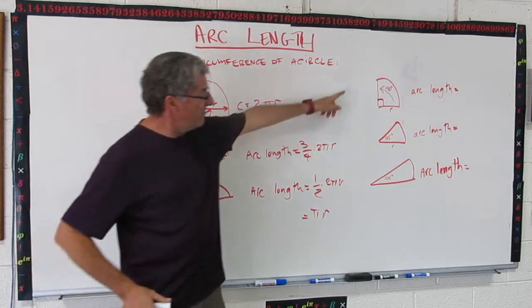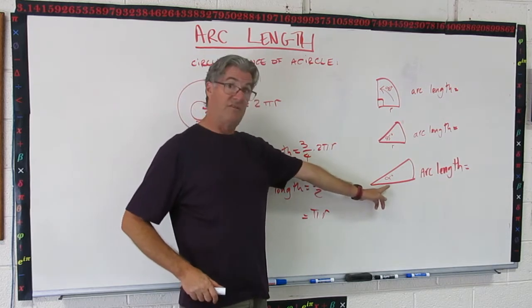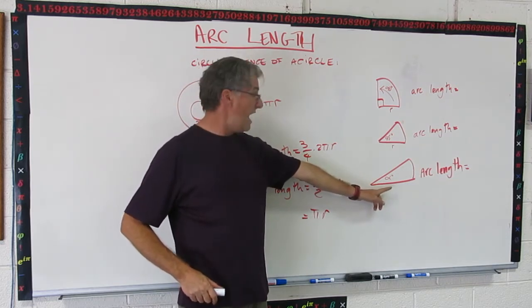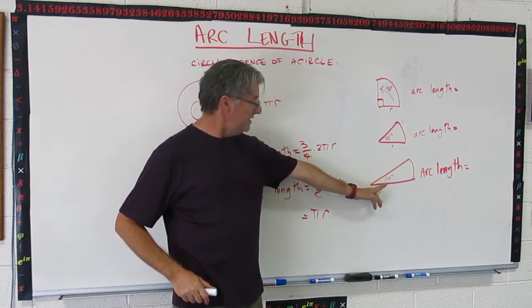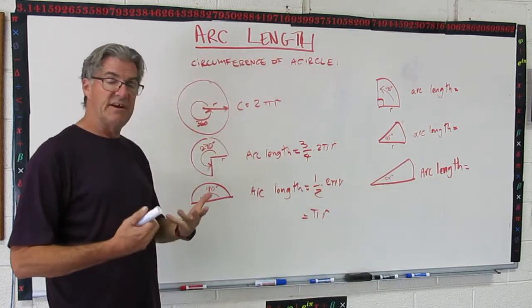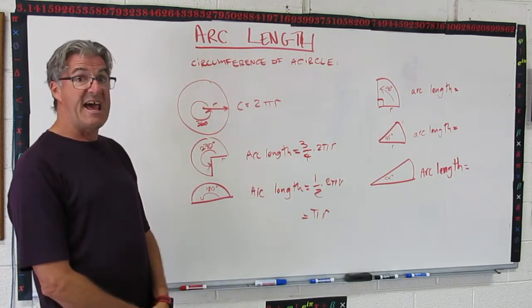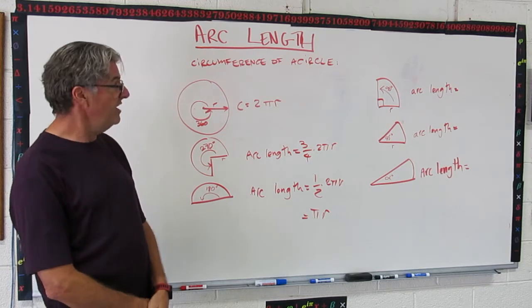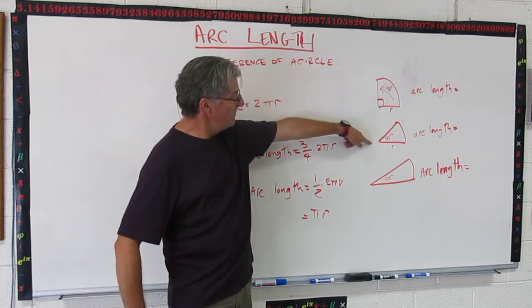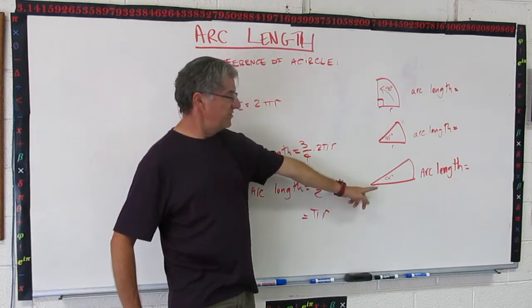What I'd like you to do is try these three and notice that this one does not have a number. It's got a variable. That's alpha degrees, and those Greek letters are commonly used to represent angles that we don't know. So first do the 90 and the 45. And then if you're feeling bold, try this one with the alpha.